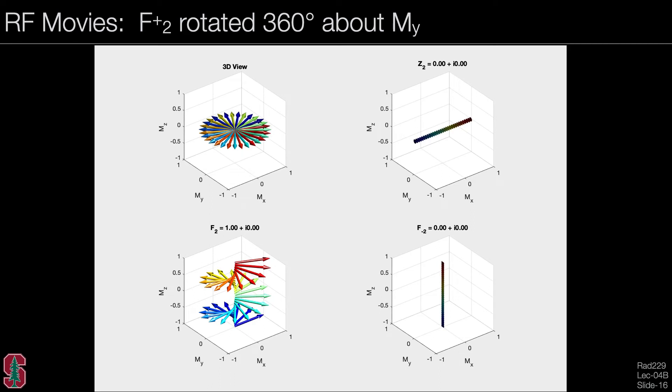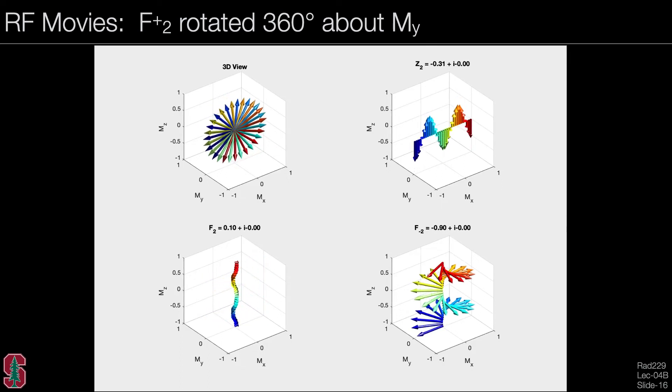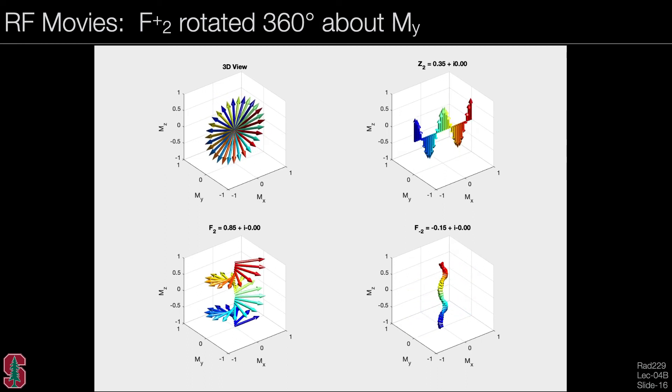Let's look at the same example, but this time the rotation is about the MY axis. So for the most part, you don't see much different here. Again, the magnetization starts in F2. It goes into F minus 2 and comes back to F2.